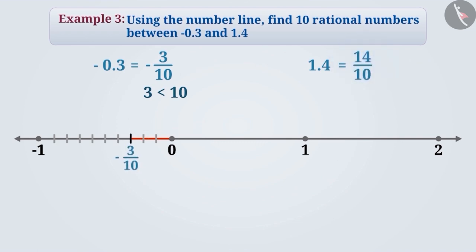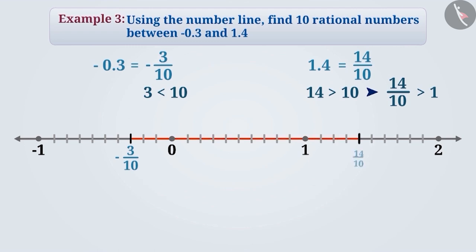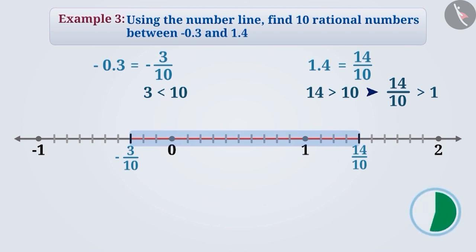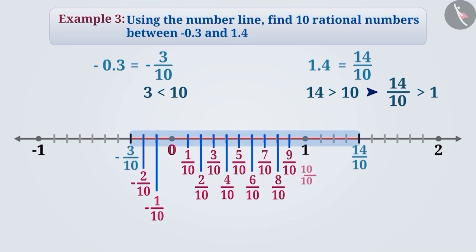In 14 by 10, the numerator 14 is greater than the denominator 10, so this number is greater than 1. To find its position on the number line, we make 10 equal parts of each unit distance and represent 14 by 10 by taking 14 of these parts. As you can see, the rational numbers between minus 3 by 10 and 14 by 10 include minus 2 by 10, 10 by 10 (or 1), 11 by 10, 12 by 10, and 13 by 10. Keep in mind that 0 and 1 are also rational numbers.